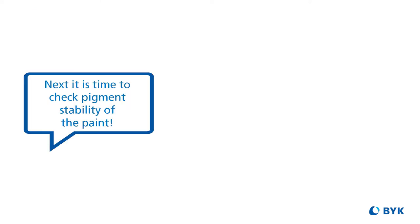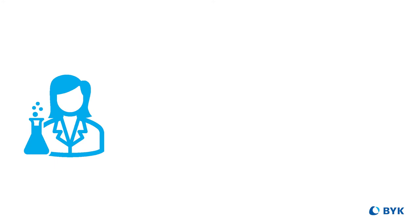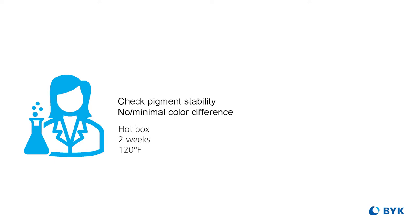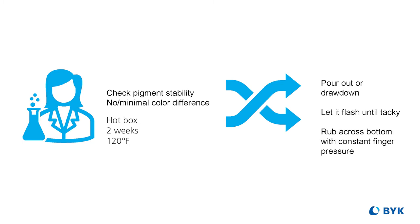Sometimes more than one dispersant can be compatible and seems to be working well in a system. Then the next question should be: is it stable over time? The best dispersion for the formulation will be stable and will have no color changes or any other defects even after running a hotbox storage stability test for two weeks at 120°F. This kind of stability can be determined either by rub-out or pour-out test of the pigment dispersions or the paint. Rub-out is the way to test the stability of the pigment dispersion when shear is applied — the forces applied when the paint is being mixed or applied on the substrate.